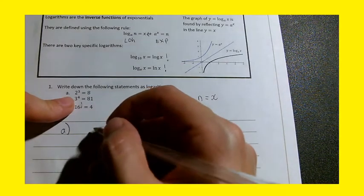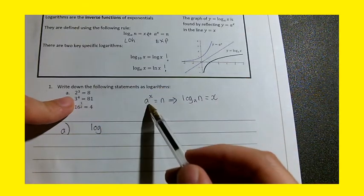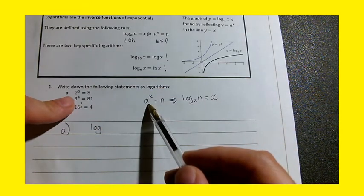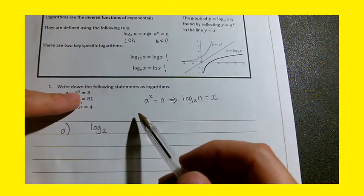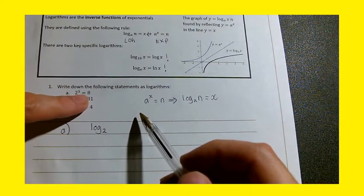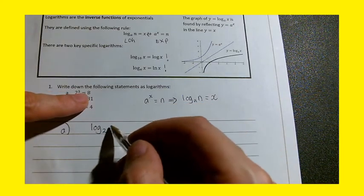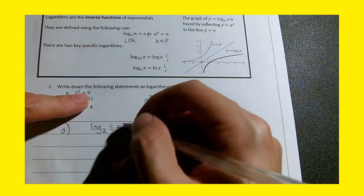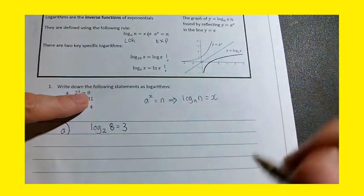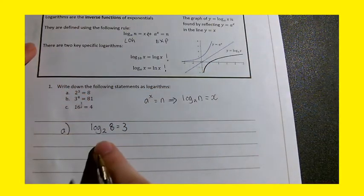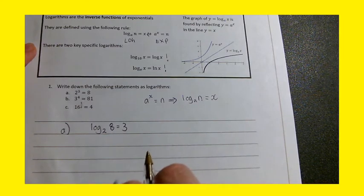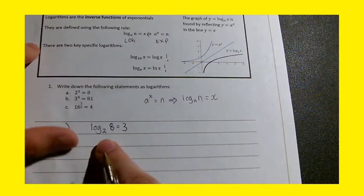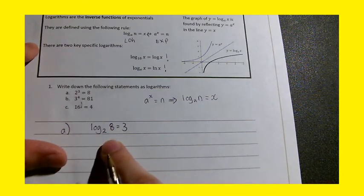So what I do is I just match up everything here. 2 cubed equals 8. So that means that log and obviously 2 is a, so I have a base of 2. 3 is the power of x and 8 is the number n. So we'll have log base 2, 8 equals 3. And that's basically it. And if you were to type that value into your calculator, log base 2, 8, your calculator will give you a value of 3. Now log base 2, 8, in other words, as I said, can be written as 2 to the power of 3 equals 8.